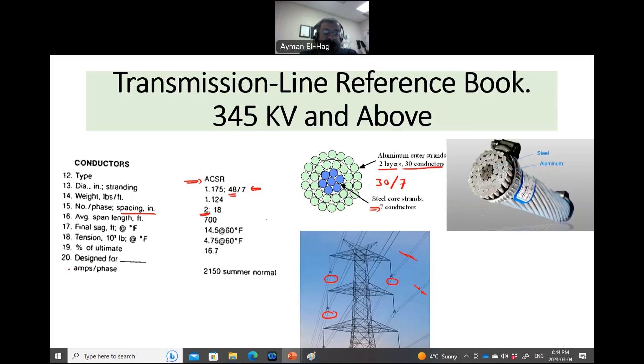Now, here another important thing for us as electrical engineers, this is designed for how many amps per phase? It's 2150 amps at the summer. So like at the peak value. So it can carry up to this current. So this is the conductor, the second component.